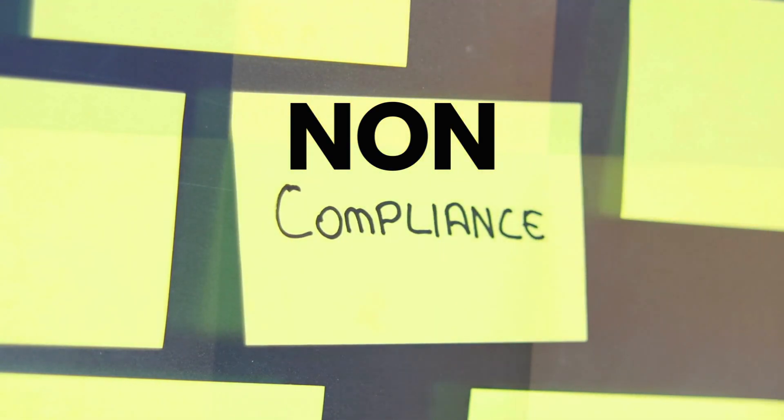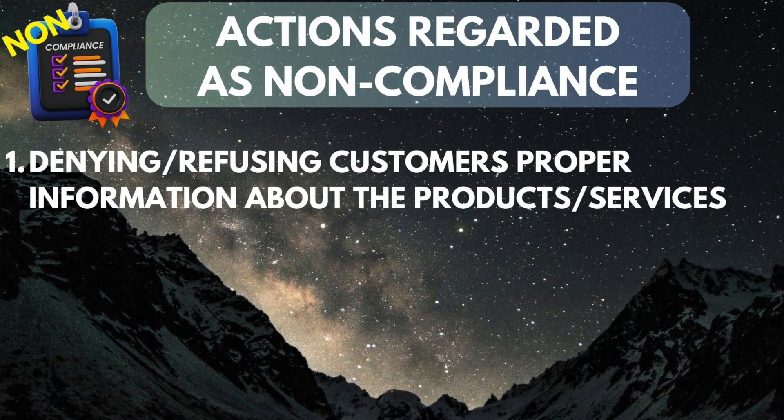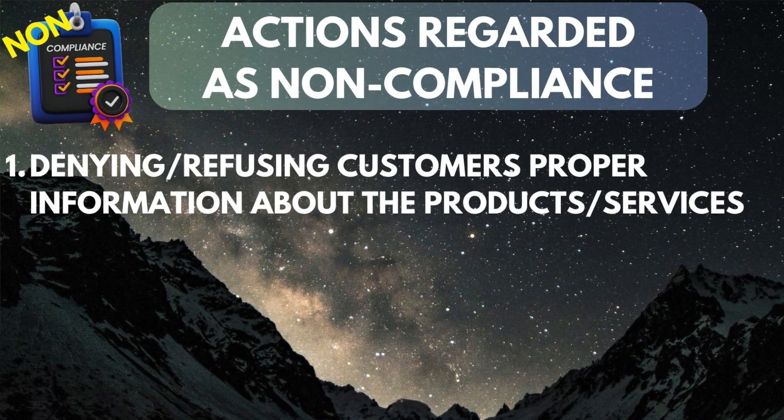Now we are going to talk about non-compliance or discrimination actions according to the Consumer Protection Act. How do you conduct non-compliance? You are in non-compliance when you deny your consumer proper information — you don't want to give information to a customer who bought a television set and doesn't know how to use it. If you deny that information, you are conducting non-compliance.